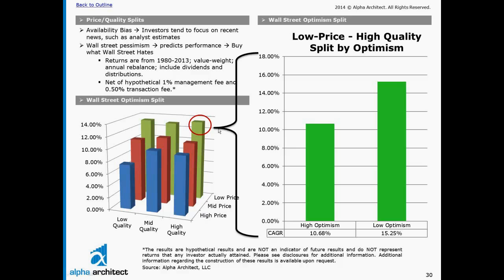The general concept is that when all the sell-side analysts are bearish on a security and citing the same reasons for a downfall, these stocks might suffer from availability bias more than stocks where sell-side opinion is more dispersed. We break out the cheap, high-quality portfolio into high-optimism and low-optimism buckets. The results are pretty clear: the cheap, high-quality stocks that Wall Street hates — presumably suffering the most from availability bias — tend to do very well in the future, whereas cheap, high-quality stocks that Wall Street can't decide on tend to perform just a little bit better than the average market.